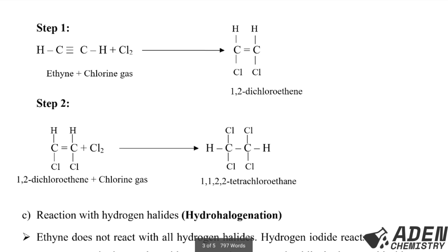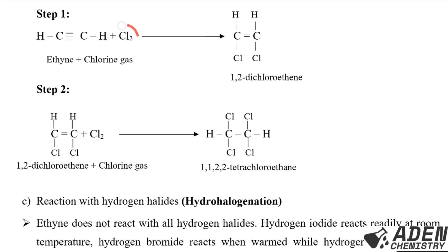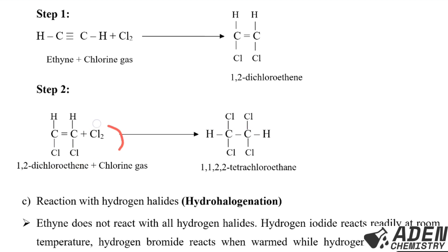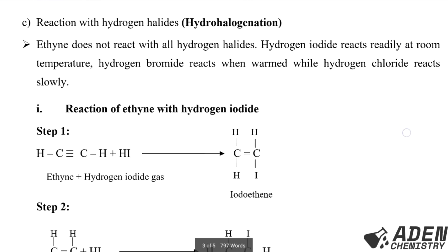Step one: ethyne reacts with chlorine gas. The triple bond breaks to form a double bond, and two chlorine atoms are added to form 1,2-dichloroethene. Step two: 1,2-dichloroethene reacts with more chlorine gas. The double bond breaks to form a single bond, and two more chlorine atoms are added — one on each carbon — giving 1,1,2,2-tetrachloroethane.